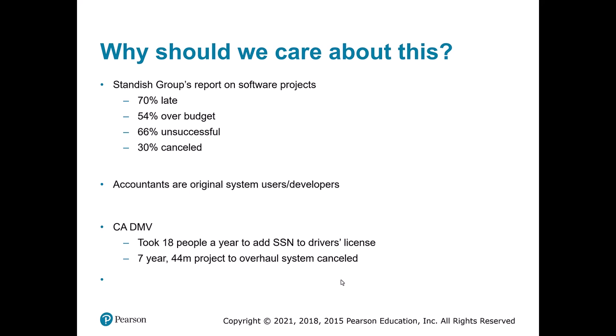Some of these legacy system projects are incredibly time-consuming. As one example, the California DMV wanted to add Social Security numbers to their driver's license system, and it took 18 people an entire year just to add that one field — a crazy amount of inertia and cost for something as simple as adding a single data field.